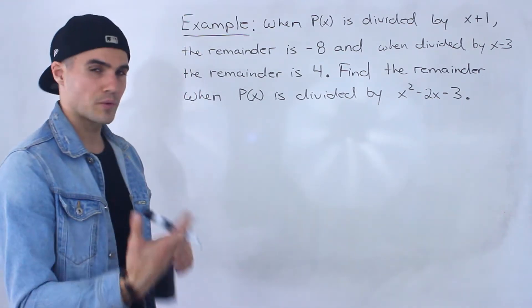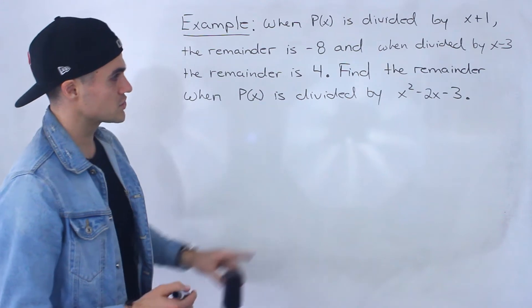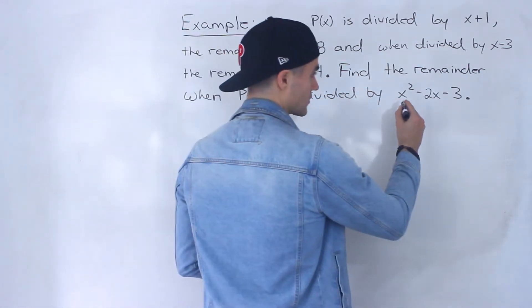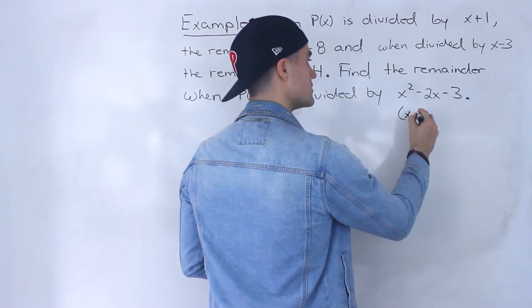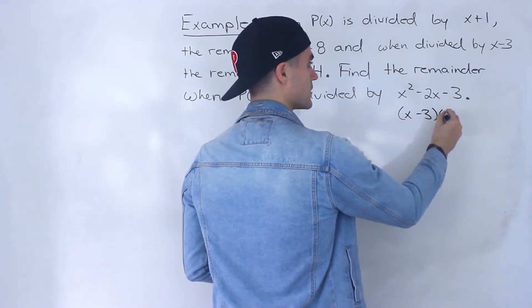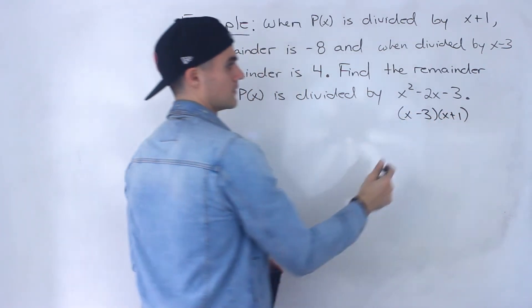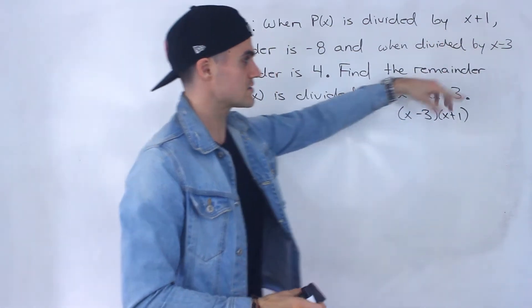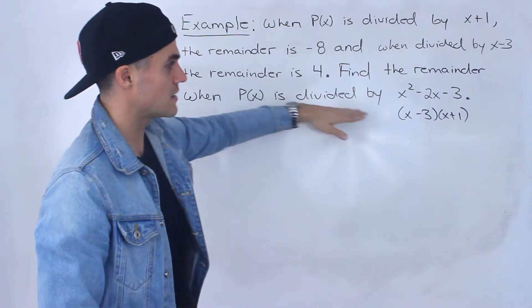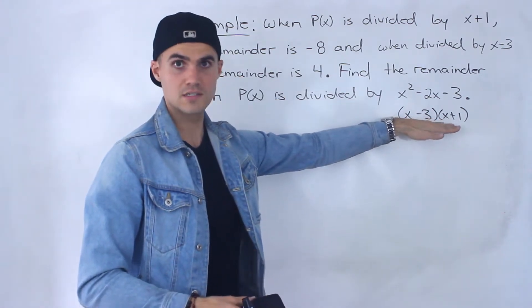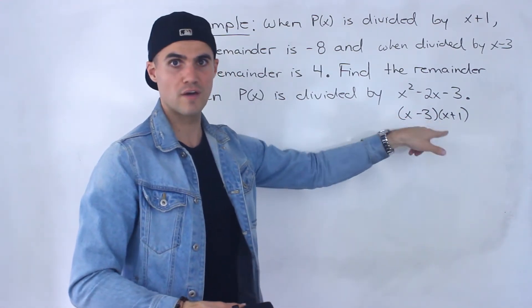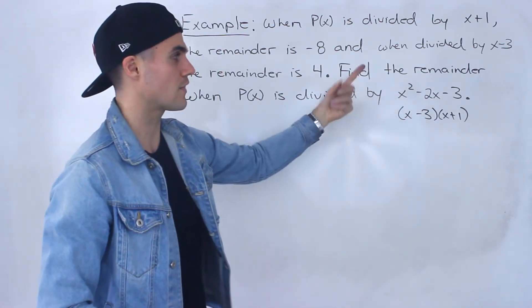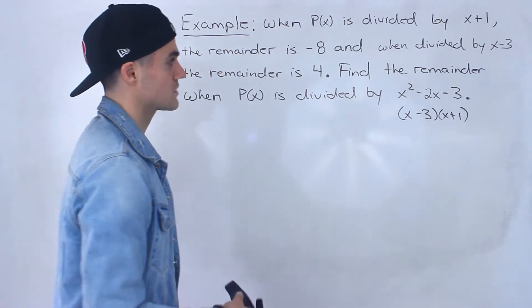Before we get into the technicalities, a couple of things I want to mention. This x squared minus two x minus three — notice that this factors into x minus three times x plus one, which we're given information about. Sometimes a question like this will already be factored for you. Sometimes it won't. I went with the non-factored version since it's tougher.